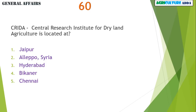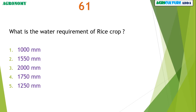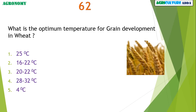CRIDA — Central Research Institute for Dryland Agriculture — is located at Hyderabad. What is the water requirement for rice crop? 1250 mm. What is the optimum temperature for grain development in wheat? 25 degrees Celsius.